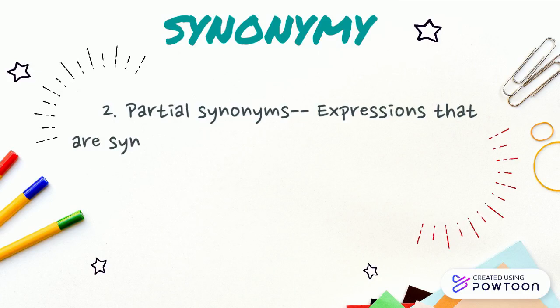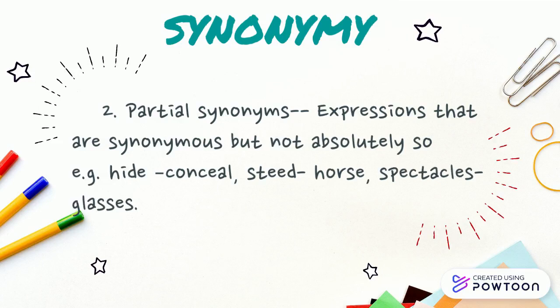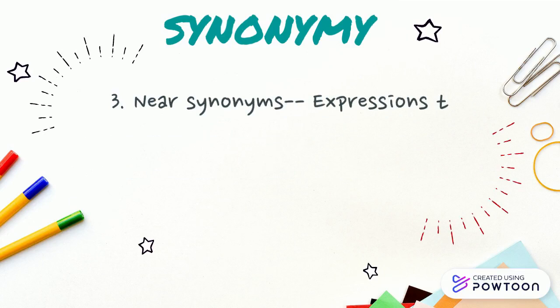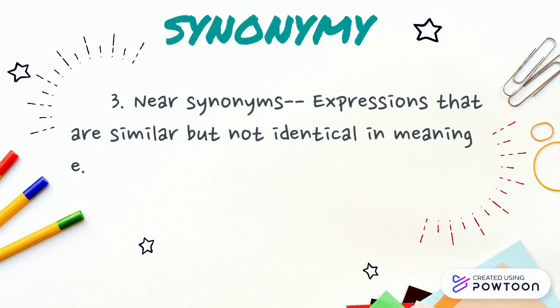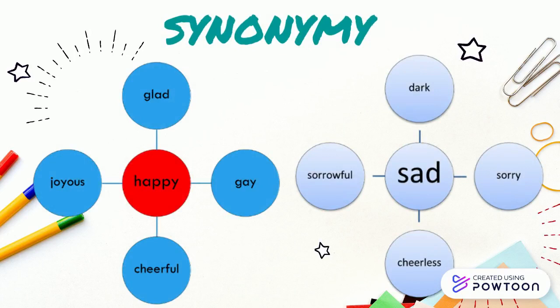Second, partial synonyms: expressions that are synonymous but not absolutely so, such as 'high' and 'concealed', 'street' and 'horse', 'spectacle' and 'glasses'. The last kind is near synonyms: expressions that are similar but not identical in meaning, such as mist and fog, or stream, river, and brook. The synonyms of 'happy' include glad, gay, cheerful, and joyous.